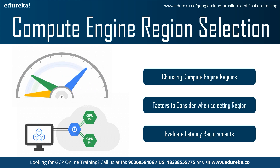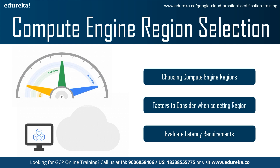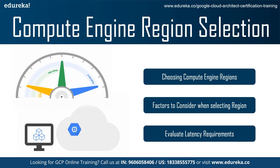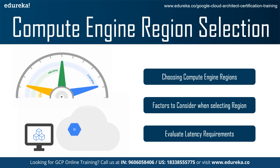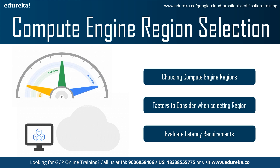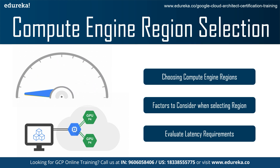Moving on to the third best practice: evaluating latency requirements. Latency is often the key consideration for region selection because high user latency can lead to an inferior user experience. You can affect some aspects of latency, but some are outside of your control, and region selection can only affect the latency to the Compute Engine region and not the entirety of latency. The first subcategory is last-mile latency — the latency of this segment differs depending on the technology used to access the internet. The second is Google front-end and edge PoP latency — the latency to Google's network edge where load balancing products terminate TCP and SSL sessions and from which Cloud CDN delivers cached results.